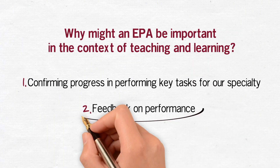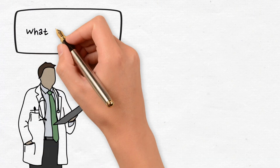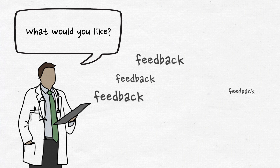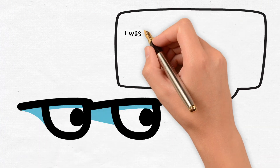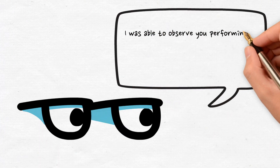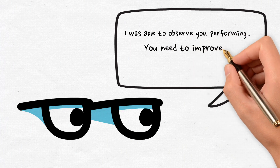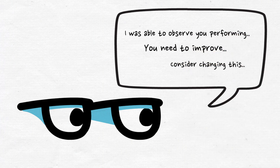The second reason is for feedback. For years, learners have been telling us that they want more meaningful and helpful feedback. Feedback is one of the most effective ways to support a resident's growth and development. The most specific and meaningful feedback is based on what is directly observed — directly observing a specific EPA task and providing meaningful feedback about it.